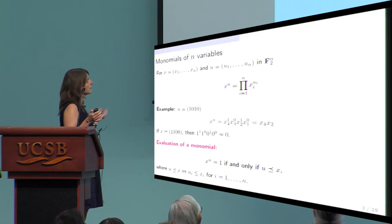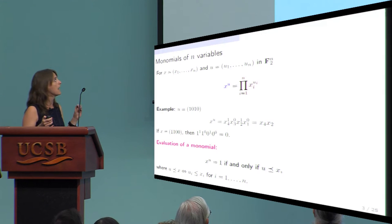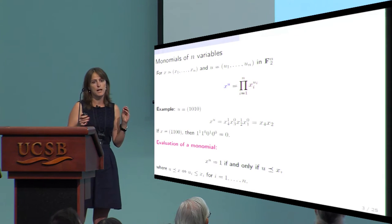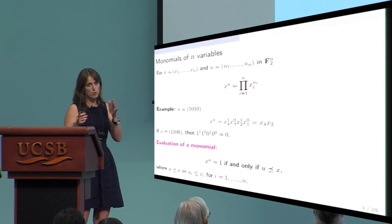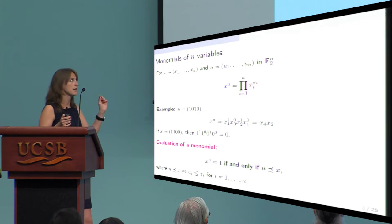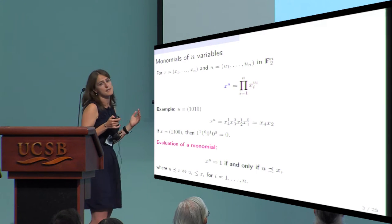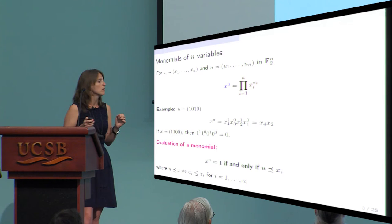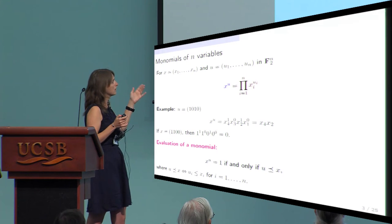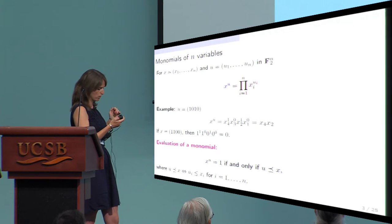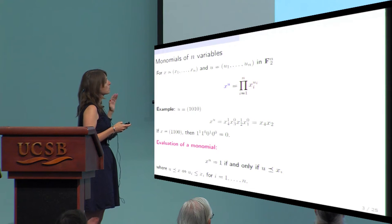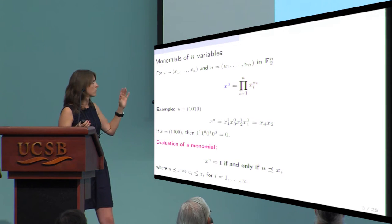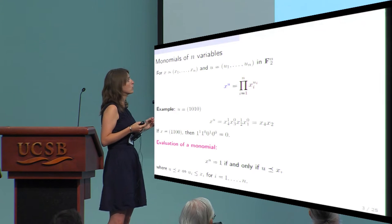The first notation is the way I will represent monomials of n variables. Given two n-bit vectors x and u, I denote x to the power of u as the product coordinate by coordinate of x_i to the power u_i. For example, if u is the vector 1010, then x^u gives x_4^1 · x_3^0 · x_2^1 · x_1^0, which simplifies to the monomial x_4 · x_2.